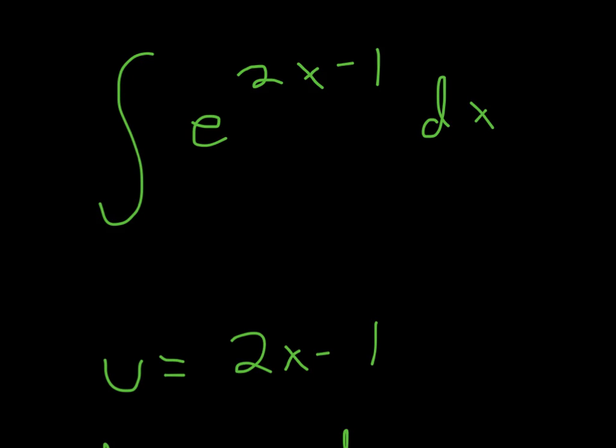So for this problem we have e to the 2x minus 1. Whenever you have e, try using u substitution and see if that works. And try putting u as whatever the power is.